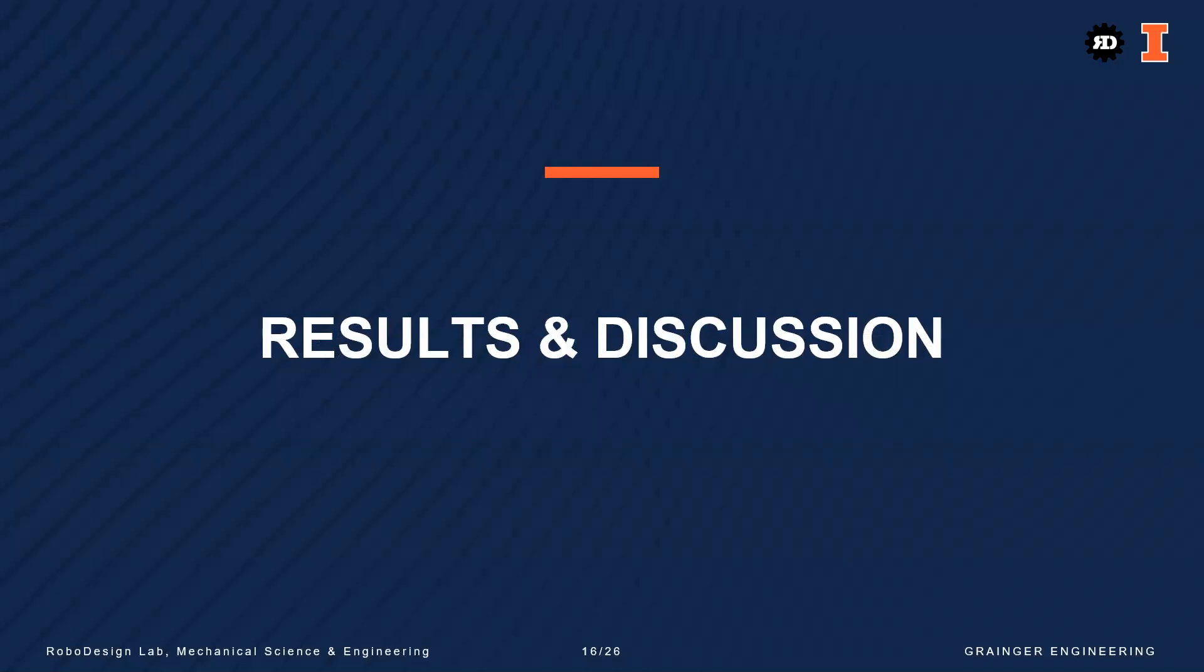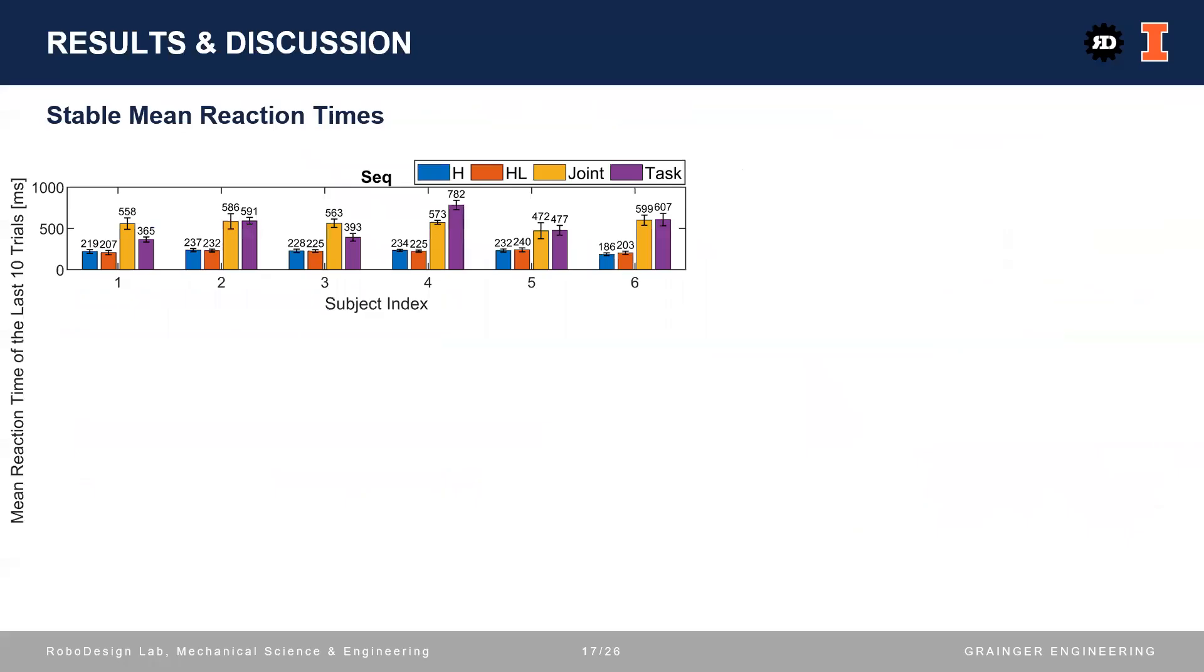Now let's see the experimental results and discuss about them. The most important result from this experiment is the stable mean reaction time. Stable here means that these reaction times were obtained after the subjects adapted to the teleoperation. Adaptation means that a subject's per-trial mean reaction times and standard deviation decreased as the subject performed more trials. On the legend, H means that the results were obtained when the subject performed the tests by himself. HL means that the subject used the motion capture linkage to perform the tests but without teleoperation.